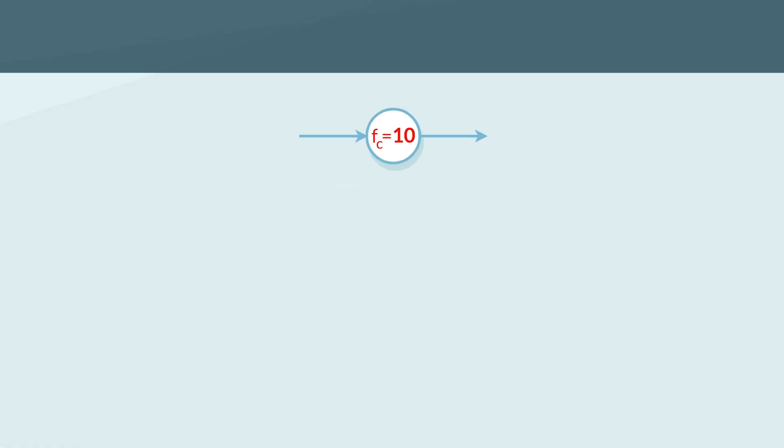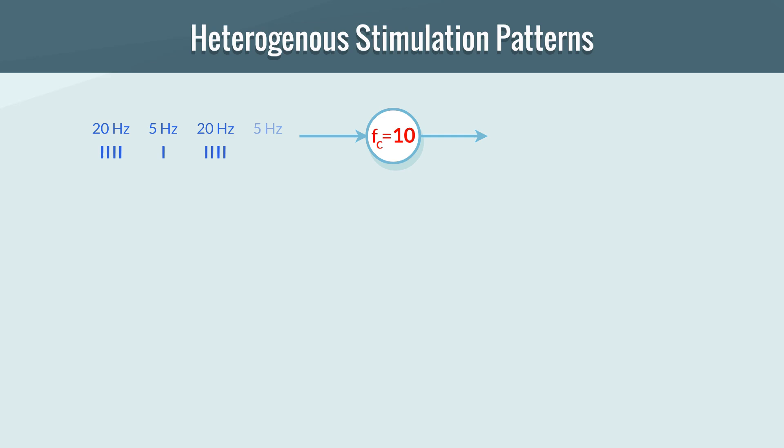The second mechanism is heterogeneous stimulation patterns, where a neuron is alternately stimulated below and above fc, with a stimulation average above fc. However, the resulting average firing rate is below fc.